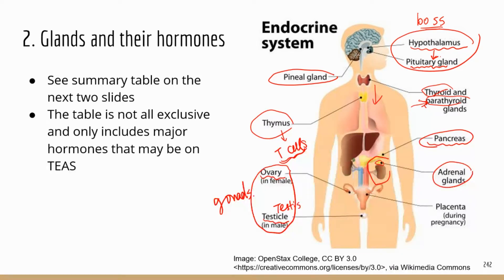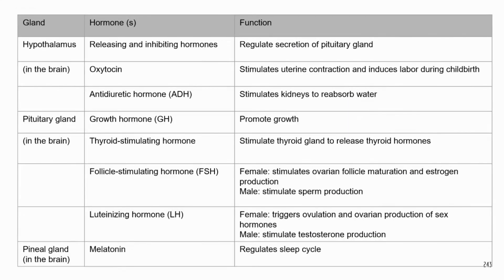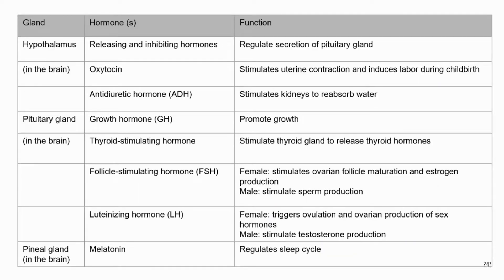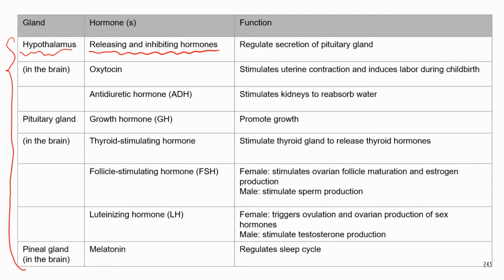One thing to note: the summary tables I made are not all-inclusive — I only listed the important hormones that may appear on the TEAS. Now let's look at the hypothalamus first. All the glands in this section of the table are located in the brain. The hypothalamus regulates the activity of the pituitary gland by producing releasing hormones, which stimulate the pituitary to secrete hormones, and inhibiting hormones, which do the opposite.